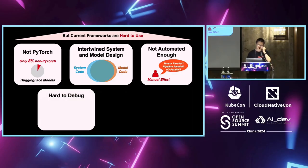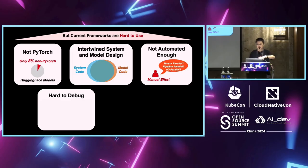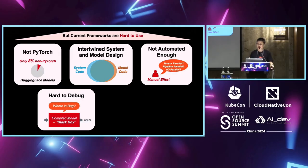The fourth challenge is that it is very hard to debug. This is a direct consequence of the intertwined system and model design. We had the experience of having 10 people spend three weeks just finding one bug in Megatron's linear layer — that is truly painful. Not just for Megatron, which uses eager execution, but also for compiled execution frameworks like JAX. Things are even worse there because you cannot break into lines of code and print out the information you need. If you have a NaN bug, you don't know what's going on, and the debugging experience is very painful.